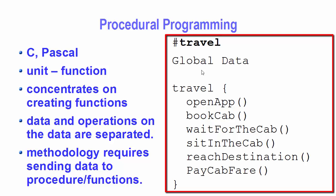Which cab service it is, what type of cab it is, and at what location the cab is standing — all this kind of data we store in a data structure in a global environment. After storing the data, we design an algorithm. Let's see what kind of algorithm we can develop in a procedural programming language for our cab booking service.